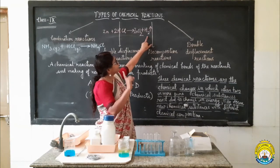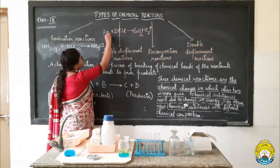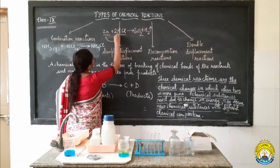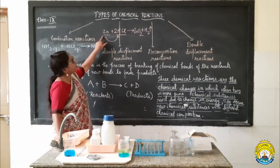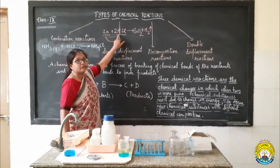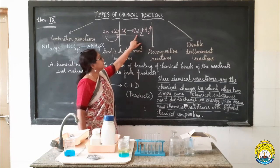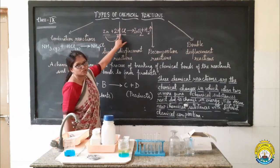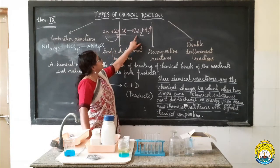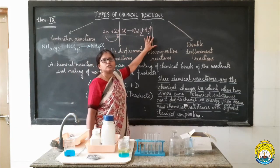That brisk effervescence was present due to the evolution of this hydrogen gas. Now, can you see that in this reaction at the reactant side we have one simple element and one compound substance? This element zinc is able to replace or displace hydrogen from hydrochloric acid. When zinc metal displaces hydrogen from hydrochloric acid, it will combine with the chlorine part to form the salt zinc chloride. Zinc has taken the place of hydrogen.